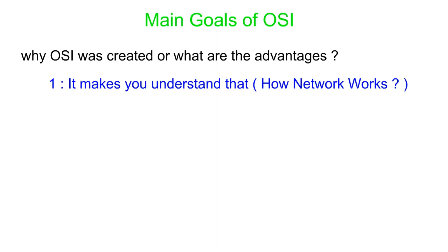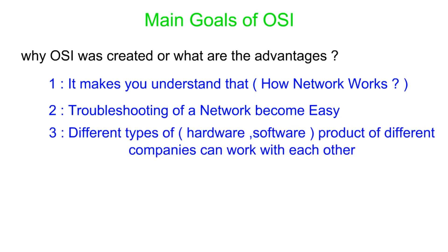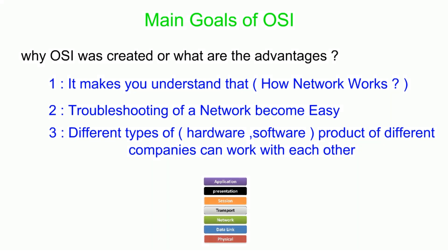Main goals of OSI — why OSI was created, or what are the advantages? 1. It makes you understand how a network works. 2. Troubleshooting of the network becomes easy. 3. Different types of hardware and software products of different companies can work with each other properly.